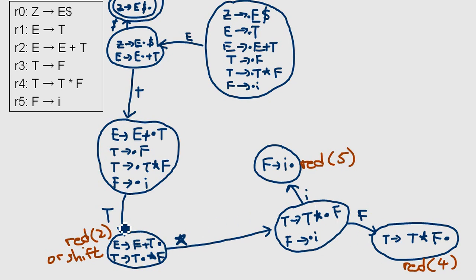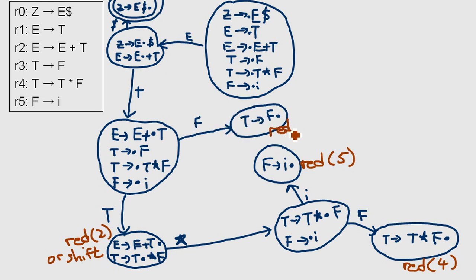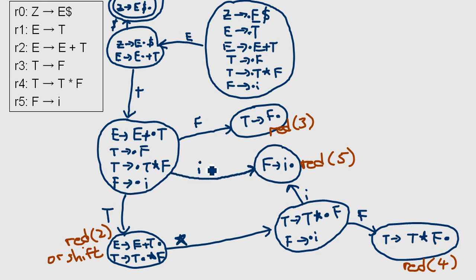We're finished with that. We had T in here, so now we check F. That's a new state with nothing else, so we can reduce it by applying rule number three — that's fine. We already have T, so now we check 'i', and 'i' will bring us to an existing state. No new state needed, so we're finished.